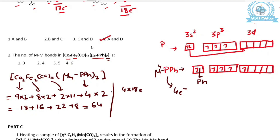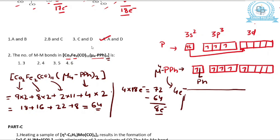To be a stable complex with 4 metals, the total should be 4 × 18 = 72. But we have calculated 64. This is 8 electrons less. From unitary method: since 2 electrons result in the formation of 1 metal-metal bond, 8 electrons will result in the formation of 8 × ½ = 4 metal-metal bonds.